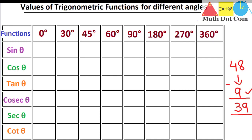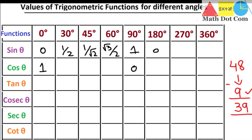I'm going to write the 9 values that you have to memorize in black color so you can easily identify them. Starting with sine 0 degree is 0 and cos 0 is 1. Then sine 30 degree is 1 divided by 2, sine 45 degree is 1 divided by root 2, sine 60 is root 3 divided by 2, and sine 90 is 1. Sine 180 is 0, cos 90 is 0, and cos 180 is minus 1. These are the 9 values you need to memorize.